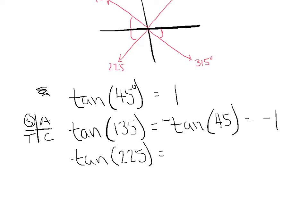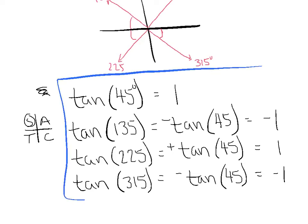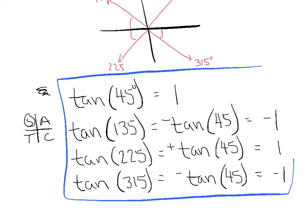If I evaluate the tangent of 225, again the same reference angle — tangent of 45. Since 225 lives in the third quadrant, tangent is positive there, so I keep it positive and get 1. Then the tangent of 315 is equivalent to the tangent of 45; however, the fourth quadrant forces me to negate it, giving me negative 1. Those four values will be very special when we go graphing because they're so friendly and nice to work with.